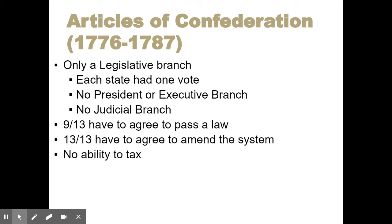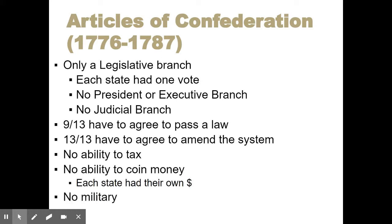There's no ability to tax in this government, meaning the national government can't force the states to give them money — they can request money, but can't force it. This is because of all the problems we had with taxation under the British system. There's no ability for the national government to coin money and no national system of currency — each of the 13 states has their own system of money. There's also no national military; the national government can request troops from the states if there is some sort of conflict, but there's no actual standing national military. These are some of the absolutely significant weaknesses of the first system of government, and this is what the Constitution will eventually try to change and fix when it's adopted to replace this in 1787.